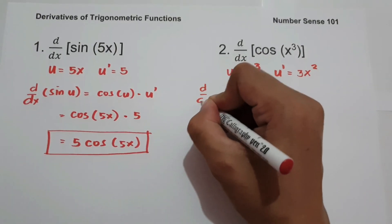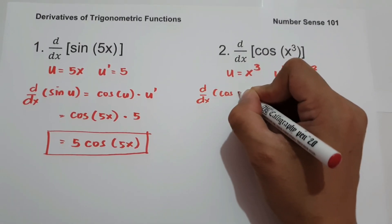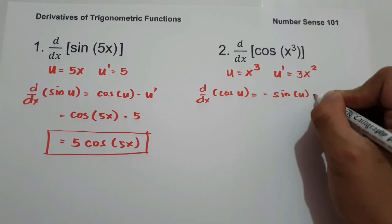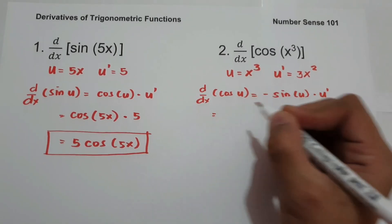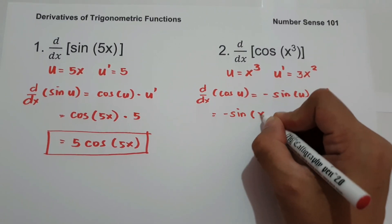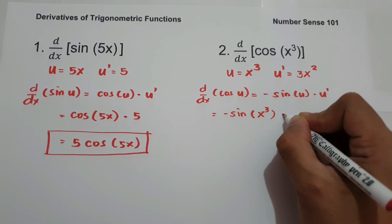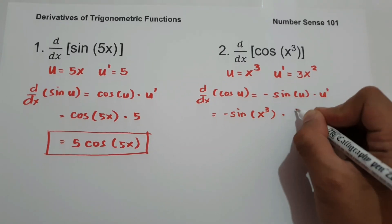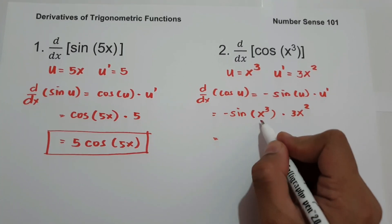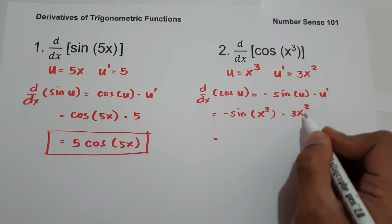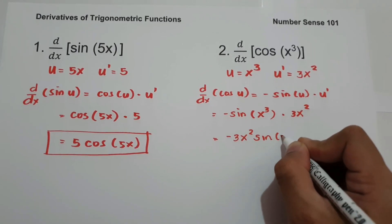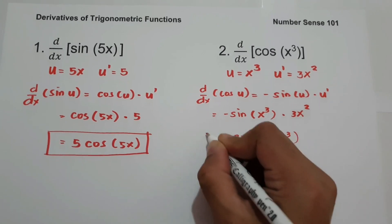The derivative of cos(u) is negative sin(u) multiplied by u'. So we have negative sin of x³ multiplied by u', which is 3x². Negative sin(x³) multiplied by 3x² gives us negative 3x² sin(x³). This will be our answer.